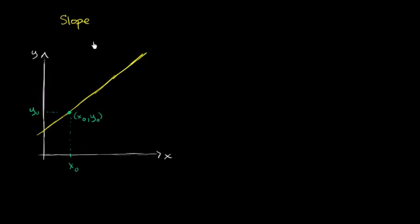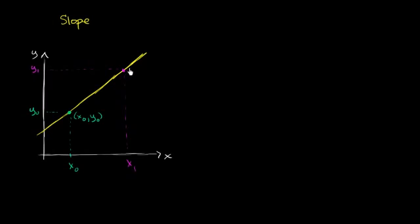So this is the point x naught comma y naught. And let's say we have another point all the way over here. Let's say that this x value right over here is x sub 1, and the y value over here is y sub 1. So this is the point x sub 1, y sub 1.